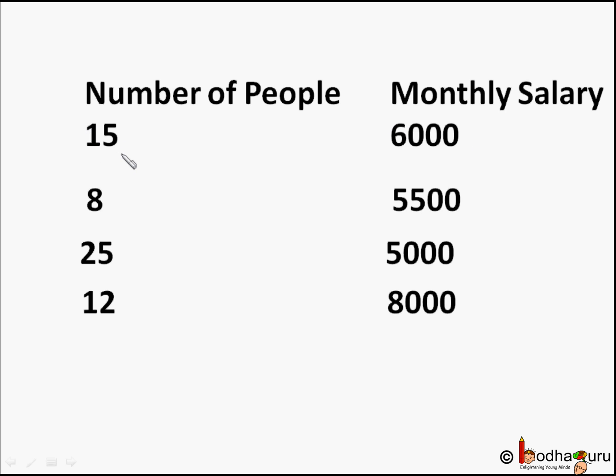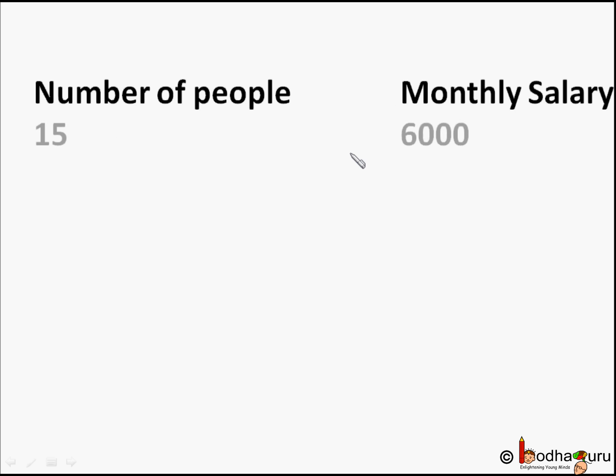15 people said they earn Rs. 6000 means there is data for 15 people, that is 15 observations, which means 6000 would appear 15 times in the data. So sum for these people would be 15 times 6000.